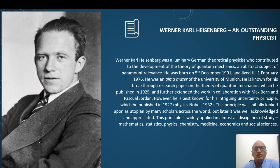Werner Heisenberg was a luminary German theoretical physicist who contributed to the development of the theory of quantum mechanics, an abstract subject of paramount relevance. He was born on 5th December 1901 and lived till 1st February 1976. He was an alma mater of the University of Munich. He is known for his breakthrough research paper on the theory of quantum mechanics which he published in 1925 and further extended the same work in collaboration with Max Born and Oscar Jordan.